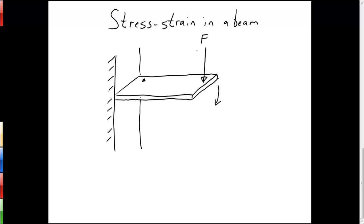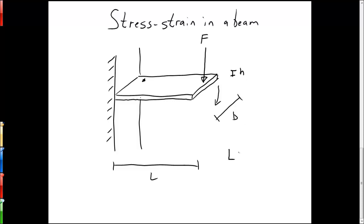To do this we're going to use something called thin beam theory. Thin beam theory basically assumes that both the length of the beam, which we'll call L, and the width of the beam, which we'll call B, are much greater than the thickness of the beam, which we will call H. So L is much greater than H and B is much greater than H.